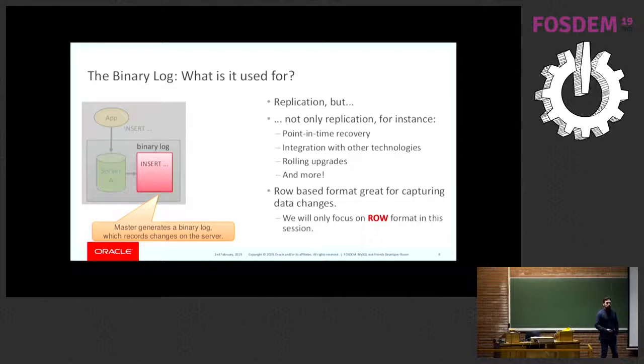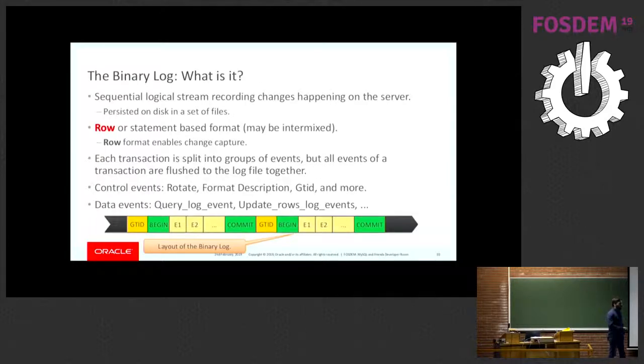For instance, in 8.0, we have more metadata when it comes to the table definitions, so the table map log event has additional information such as the name of the columns, which fields are the primary key, whether this column is signed or unsigned, and so on. And at its core, it's really just a sequence of events. But in the end, it's a sequential history of the execution that happened on the master with the changes that were produced by then.